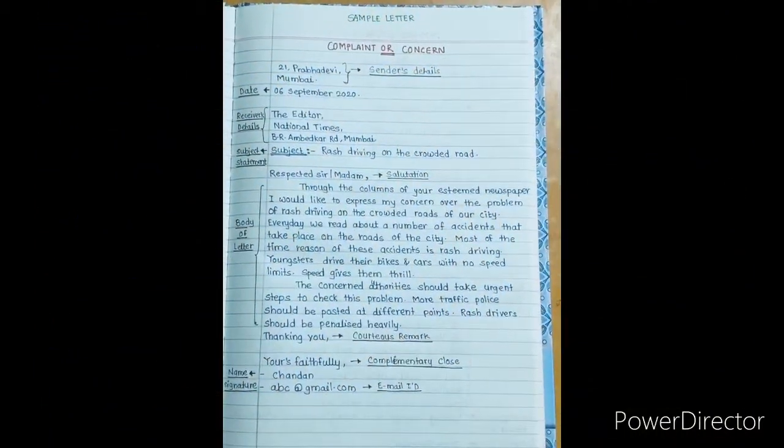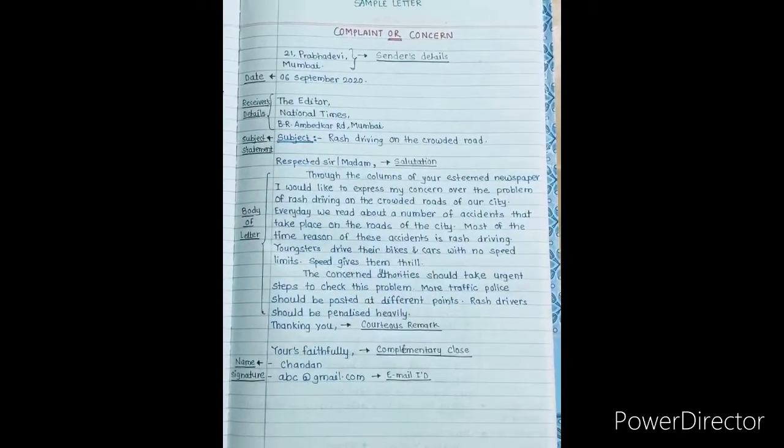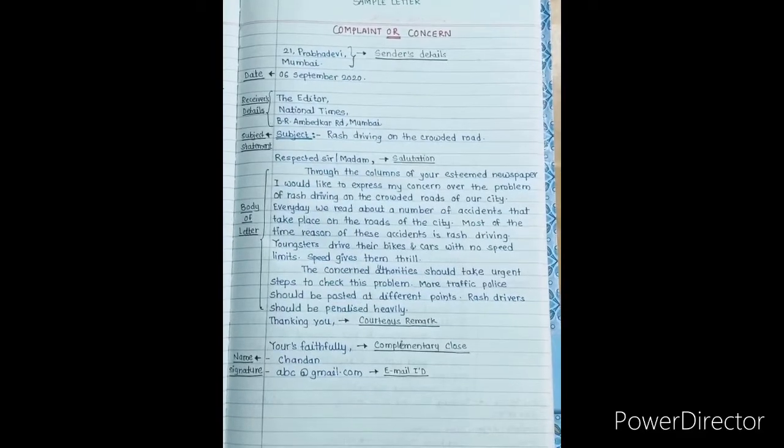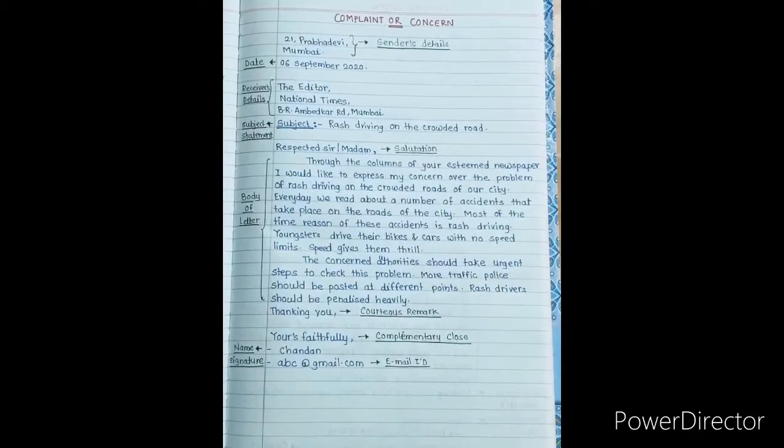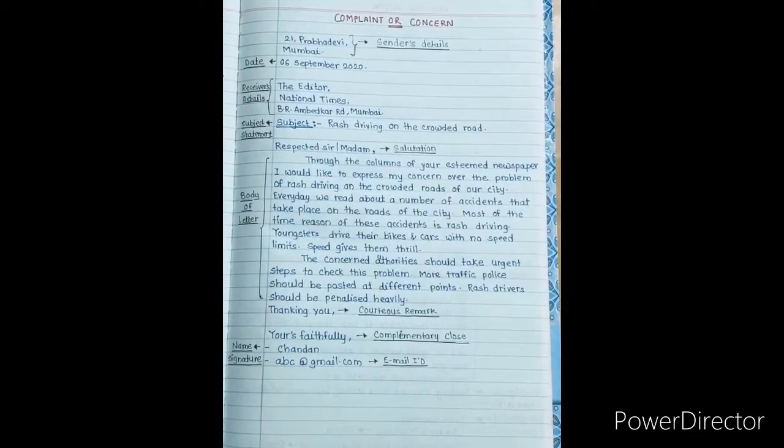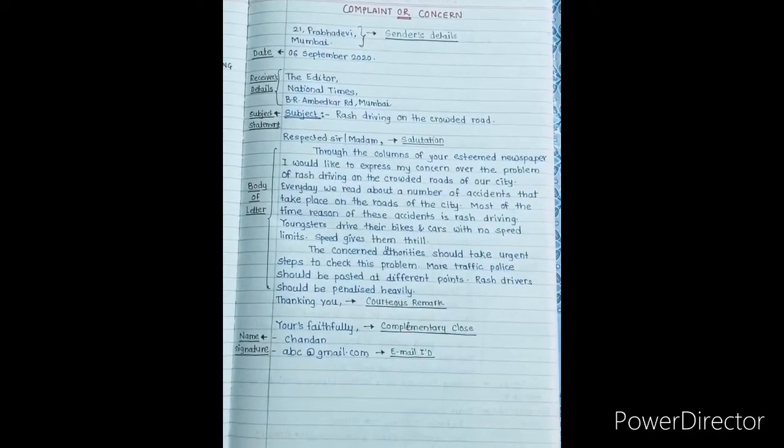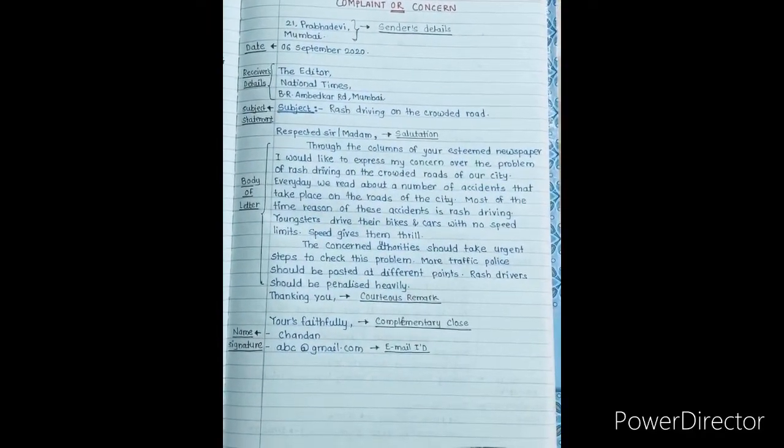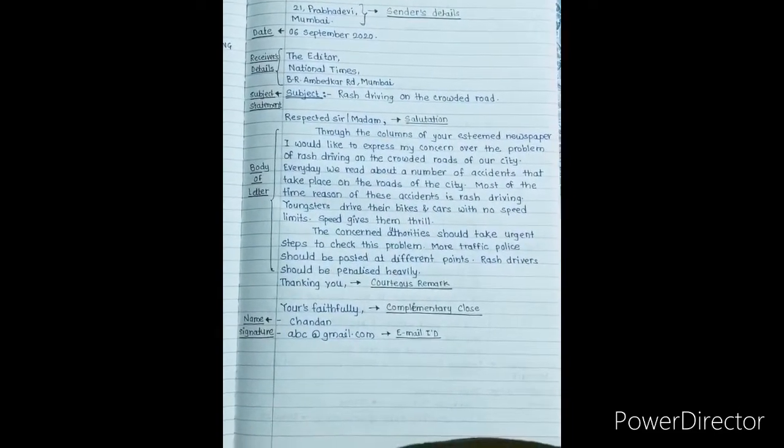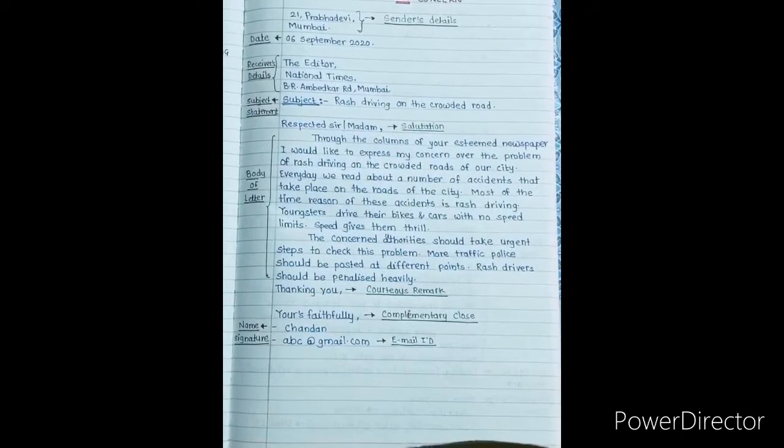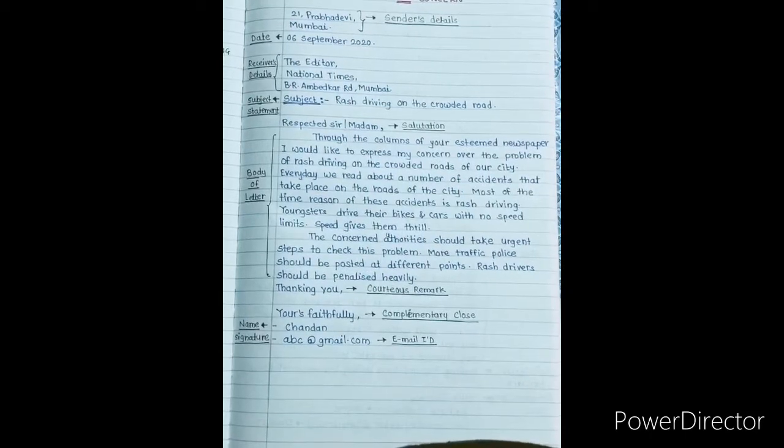I have one sample letter over here. I have written it for you students. It is a complaint concern letter. It is a type of formal letter. According to the format, I have mentioned the sender's details first: 21 Prabhadevi, place Mumbai. Then I have mentioned the date, that is 6th of September 2020. Next I have mentioned the receiver's address and designation: The Editor, National Times, BR Ambedkar Road, Mumbai.